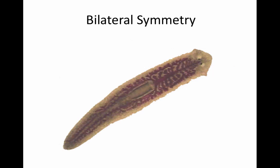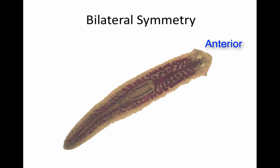Some animals, starting with flatworms, developed bilateral symmetry. Through mutations they evolved this bilateral symmetry, and the advantages it provided meant it was eventually selected for. With bilateral symmetry there is only one way to divide the animal into two mirror images — along the axis dividing left and right. This was very important because once you have bilateral symmetry you have a clear front and a clear rear: an anterior part — the head — and a posterior part — the tail. This orientation is great for movement.